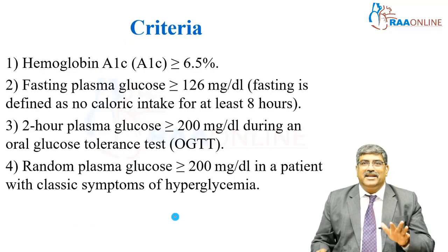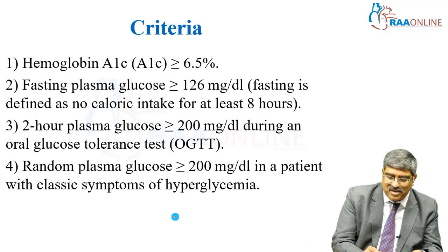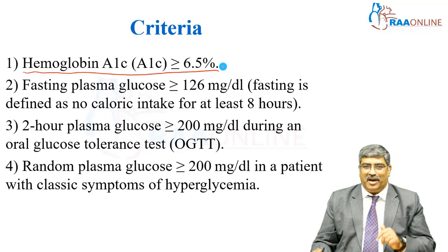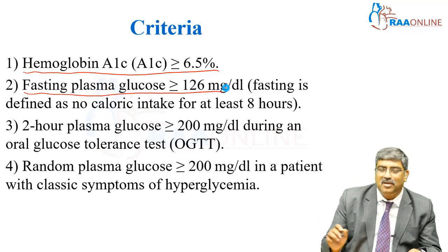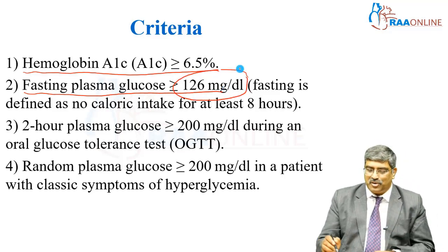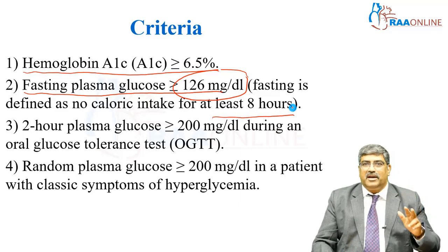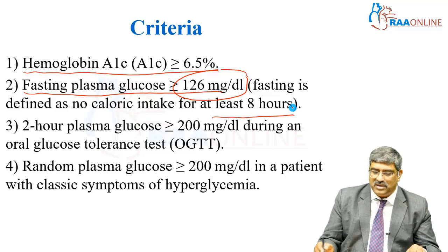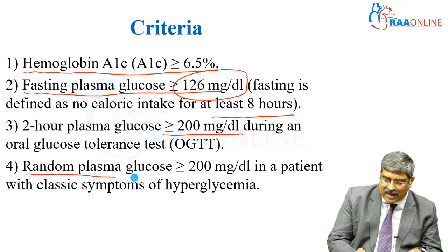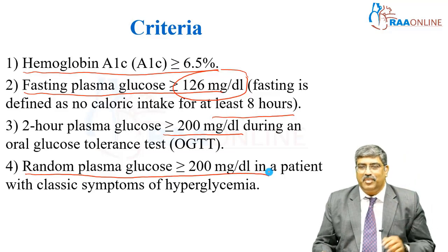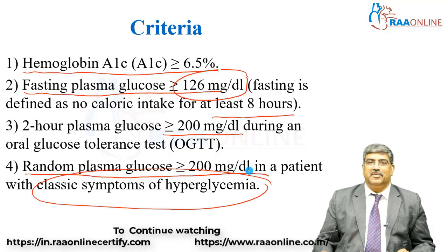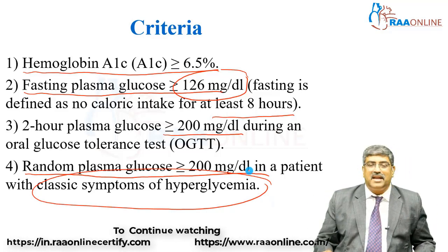Now coming to the criteria to diagnose diabetes mellitus: HbA1c greater than 6.5%, fasting blood sugar greater than 126 mg/dL with fasting of at least 8 hours, postprandial sugar at 2 hours greater than 200 mg/dL, and random sugar greater than 200 mg/dL in a patient with classical symptoms of hyperglycemia. These are the four criteria to classify a patient as having diabetes mellitus.